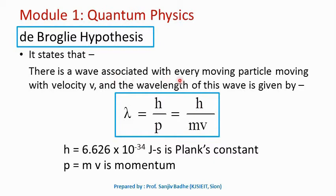According to De Broglie's hypothesis, every moving particle has a wave associated with it, and the wavelength of this wave is given by λ = h/p. It is called a hypothesis because firm evidence was not available — it is a proposed explanation made on the basis of limited evidence as a starting point for further investigation. De Broglie said if wave-particle duality exists for light, then wave-particle duality must exist for all types of particles, so there should be a wave associated with an electron or any other particle moving with velocity v, with wavelength λ = h/p.